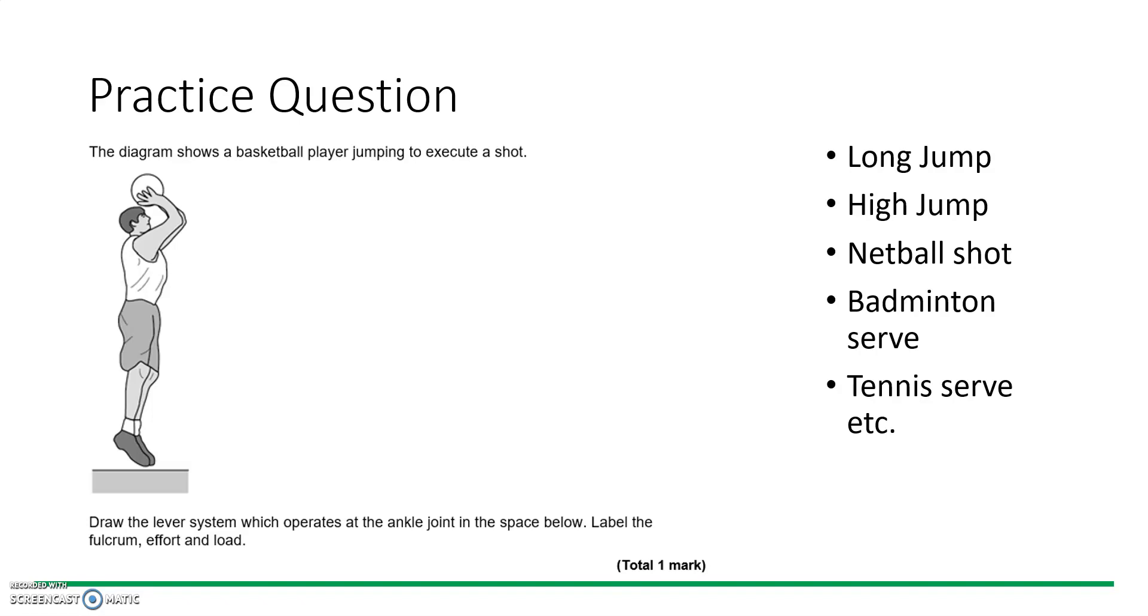Another question here: the diagram shows a basketball player jumping to execute a shot. Draw the lever system which operates at the ankle joint in the space below. I've highlighted ankle joint here because this is identifying the fulcrum to you.